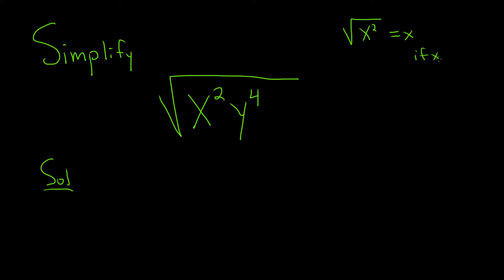In this problem, we're assuming everything is positive, so all is good. So an easy way to do this is to write everything as something squared because we have a square root.